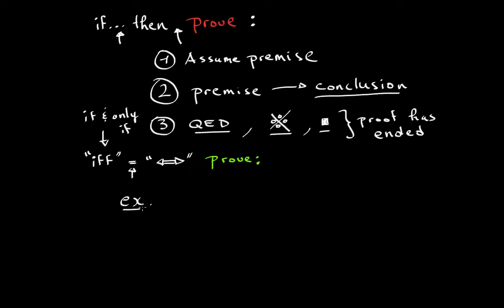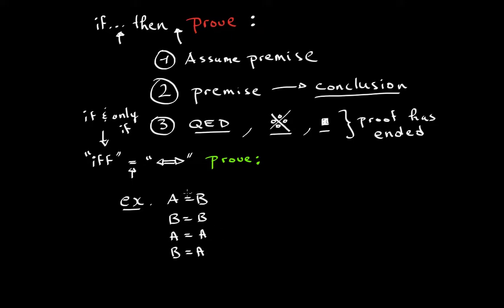If they give you A equals B, what does this mean? It means both things are interchangeable — equivalent to saying B equals B, A equals A, or B equals A. These are all permutations of the original statement.